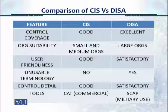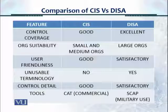Organizational suitability: CIS is usually good for small and medium organizations. But for large organizations, you require more intense, broader controls because they have a much bigger and more diverse IT infrastructure. So DISA usually suits larger organizations.